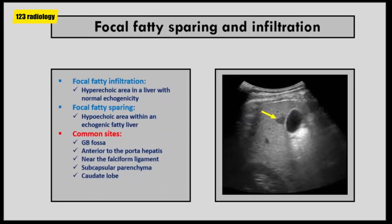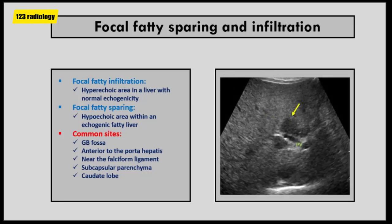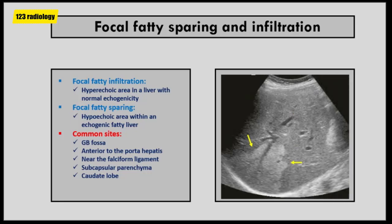Although the process of fatty infiltration is usually diffuse, fatty deposition or fatty sparing may be focal, resembling a mass. Focal fatty infiltration is a hyperechoic area in a liver with normal echogenicity, while focal fatty sparing is a hypoechoic area in a hyperechoic liver. Focal fatty changes are usually seen in characteristic locations. A typical common site is the gallbladder fossa — the liver may show diffuse increased echogenicity with a hypoechoic area at the gallbladder fossa representing focal fatty sparing. Another typical site is anterior to the porta hepatis, near the falciform ligament, or in the subcapsular parenchyma, or in the caudate lobe.